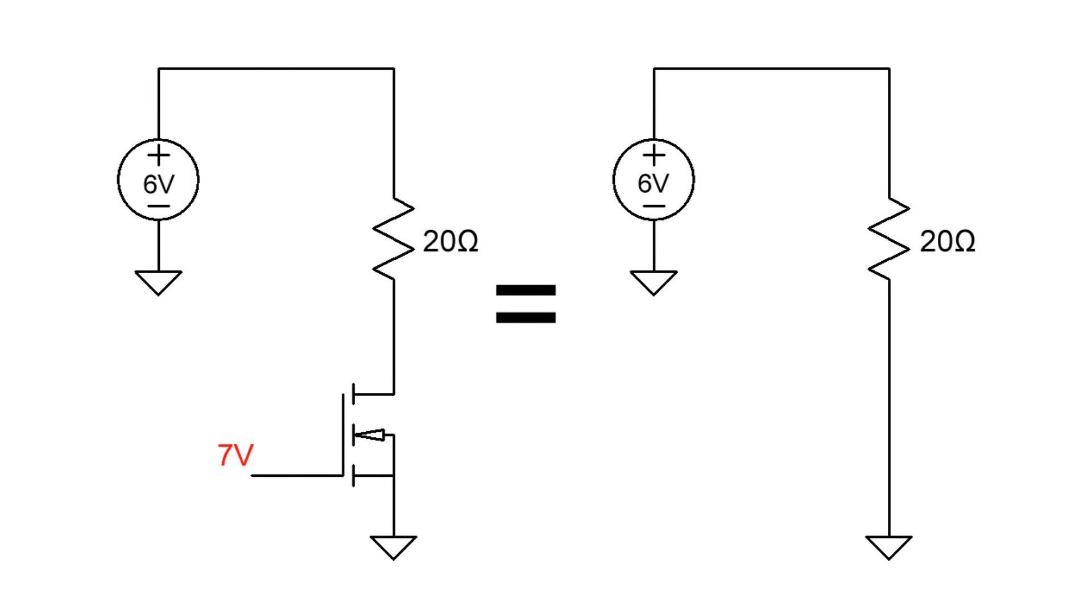If we use an external 7 volt source we can switch the MOSFET on. When the MOSFET is on there's almost zero resistance across it, which means we have a direct connection to ground so the voltage here is almost zero volts. This gives us a complete circuit. So current flows from the 6 volt supply, through the resistor, through the transistor, and into the return current path.